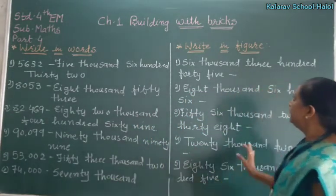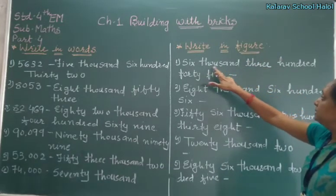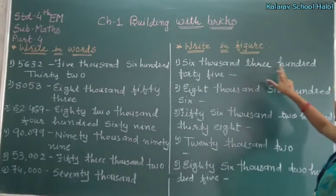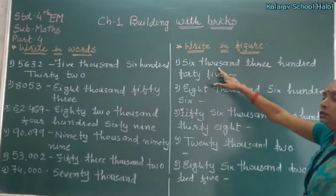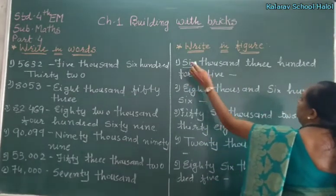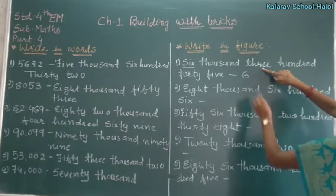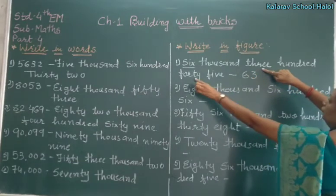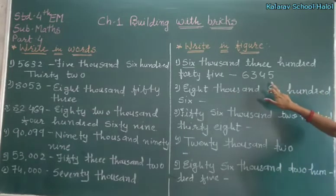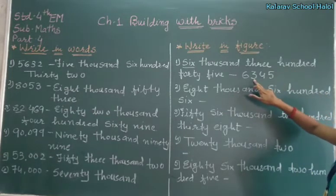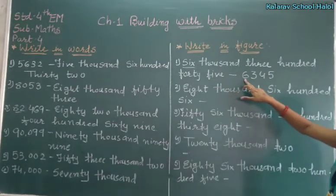Now, see — write in figure. Look at children, see: six thousand three hundred forty-five — 6,345. Now 1,000's not here — only 6. So 6,000, then 100 — 345, 45. Now check it: 45, then 100, 3,000, and 6,000. Check it. Right?